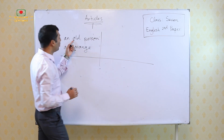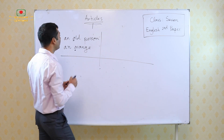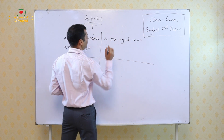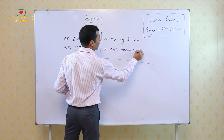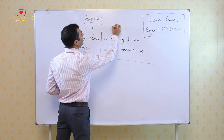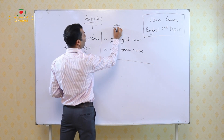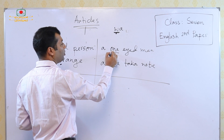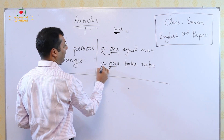But if this O is pronounced as W — for example: a one-eight man, a one taka note. Here, O in 'one' is pronounced as W. So when you are pronouncing it as W, and W is a consonant, while pronouncing the word 'one' we are pronouncing it starting with W — so W is a consonant. Only for this, we have to use the article A, not AN.